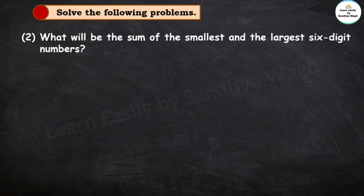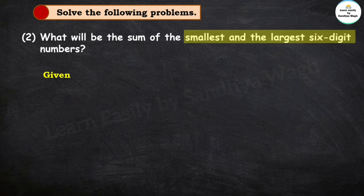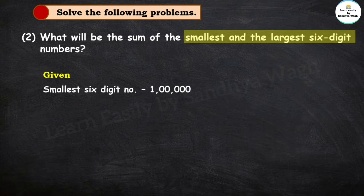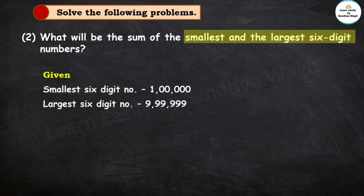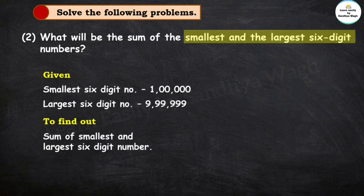What is the given information in this question? The smallest and the largest 6-digit number. The smallest 6-digit number is 1 lakh, that is 1,00,000. The largest 6-digit number is 9,99,999. We need to find the sum of the smallest and largest 6-digit numbers.